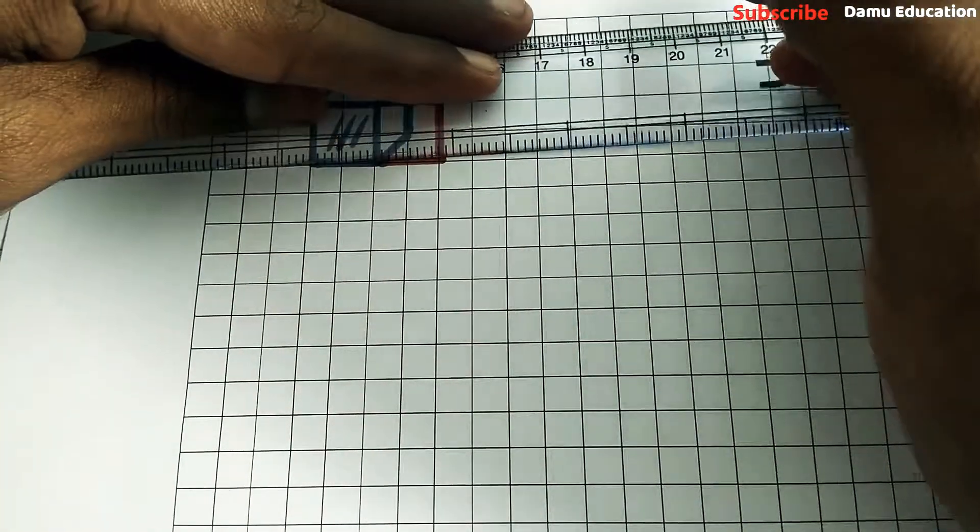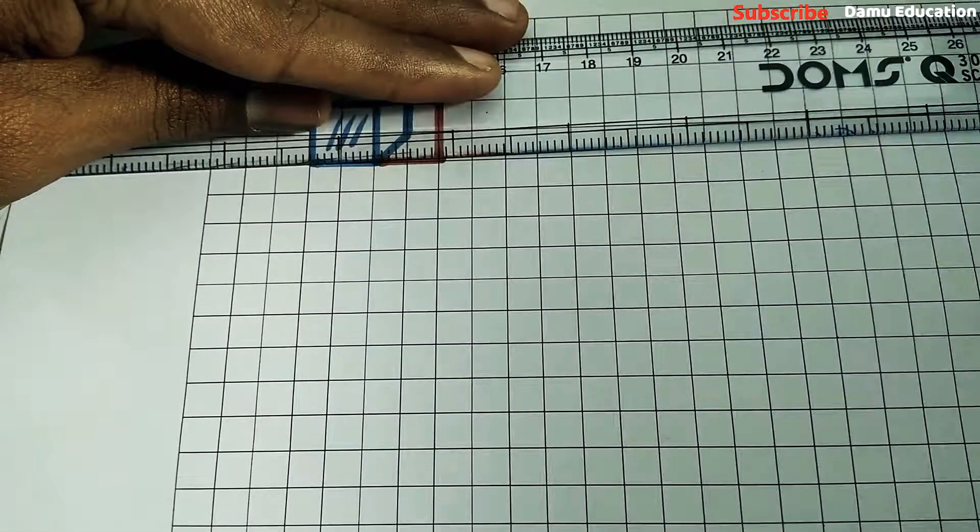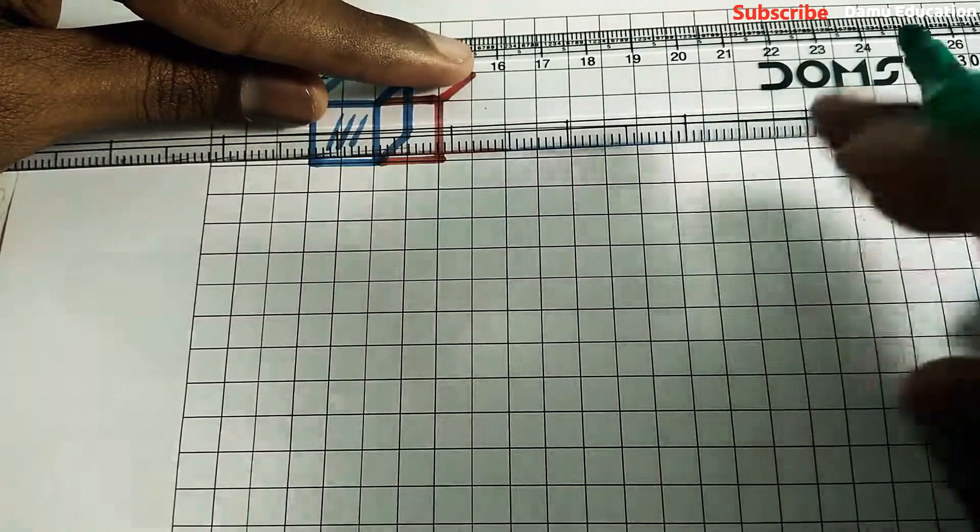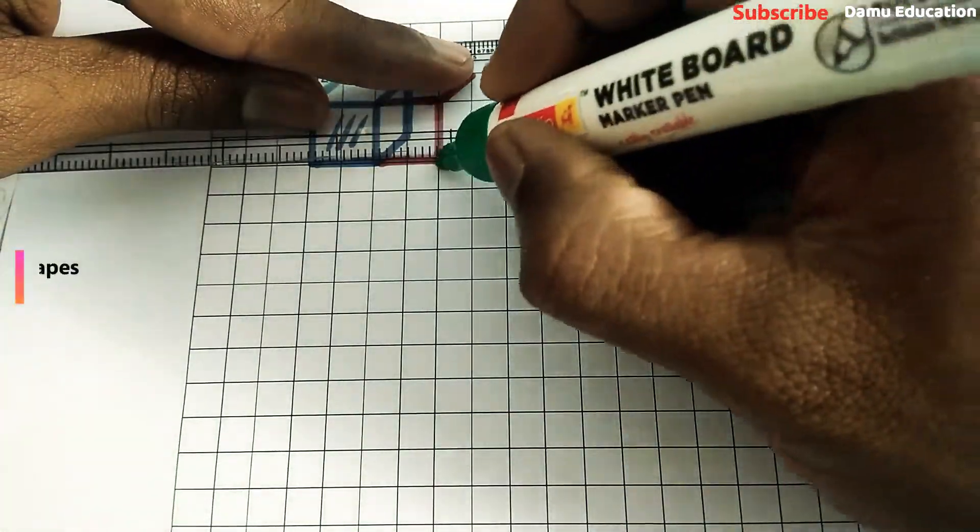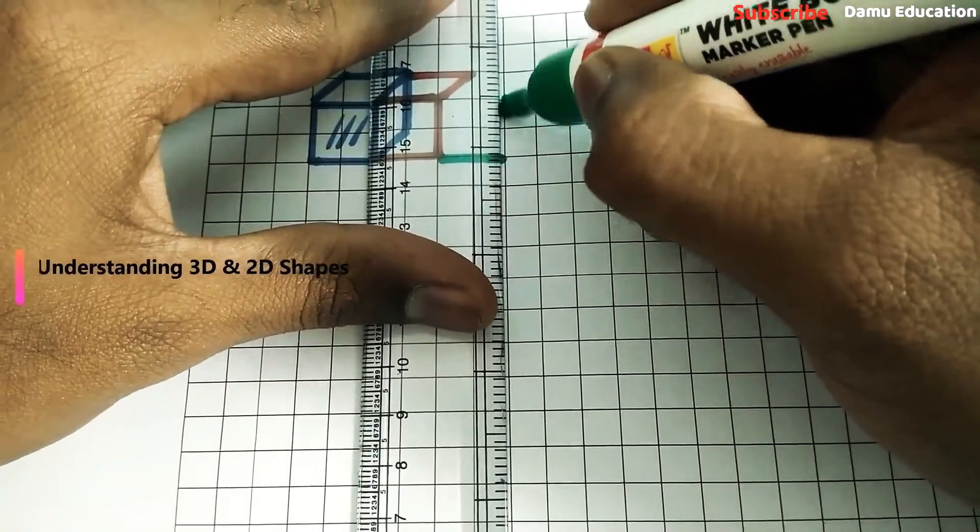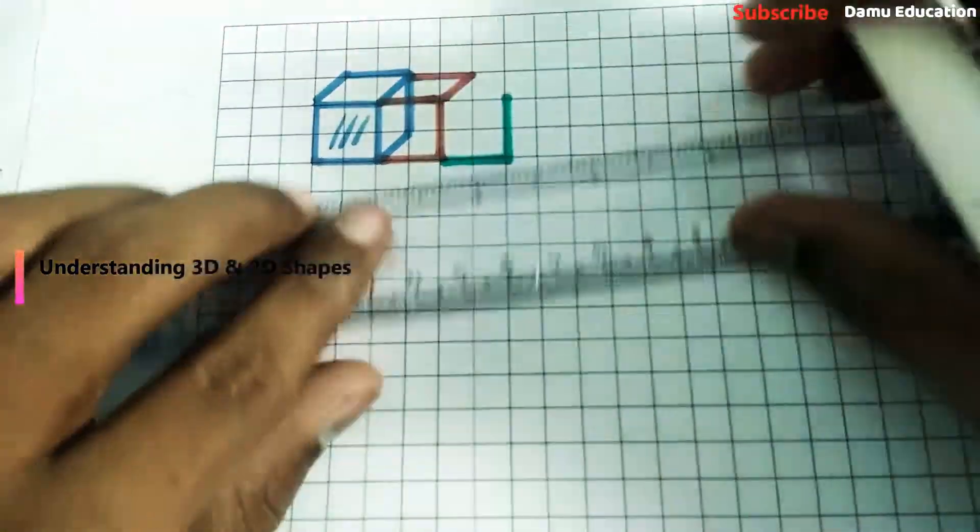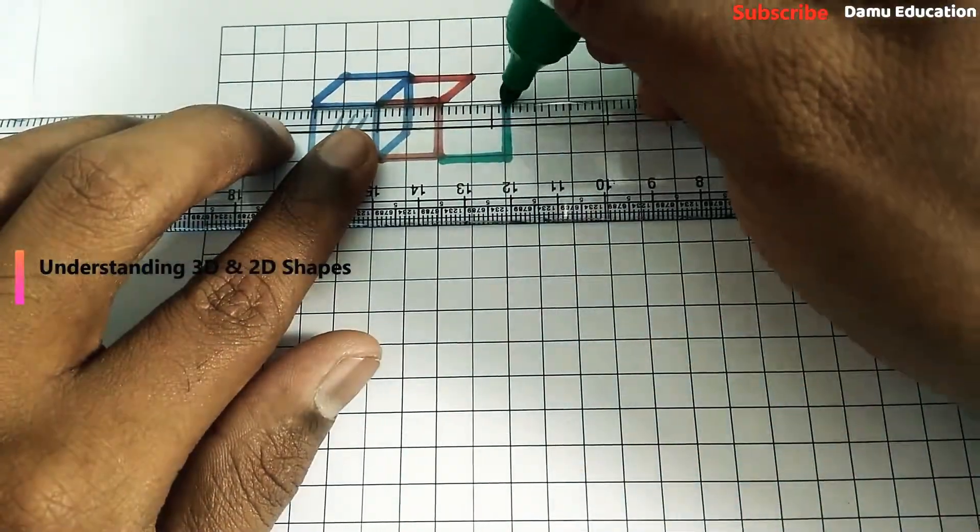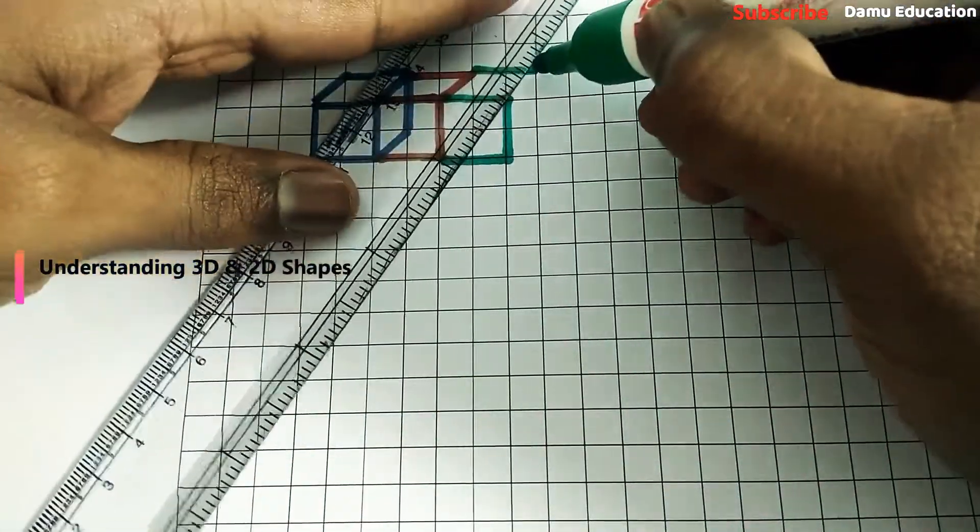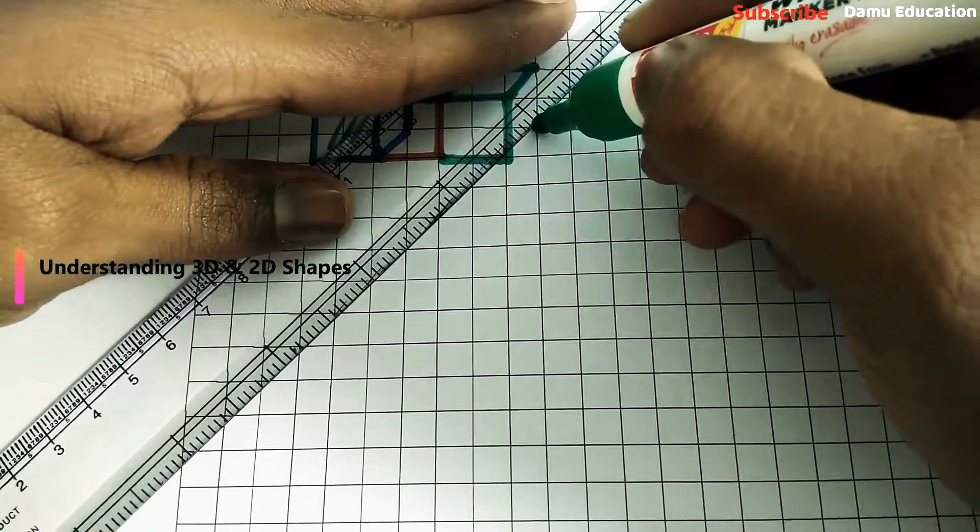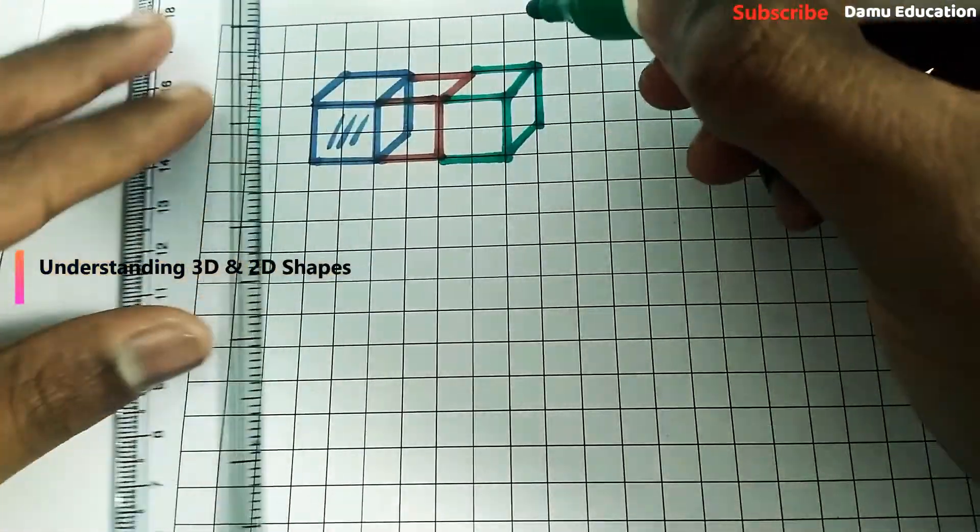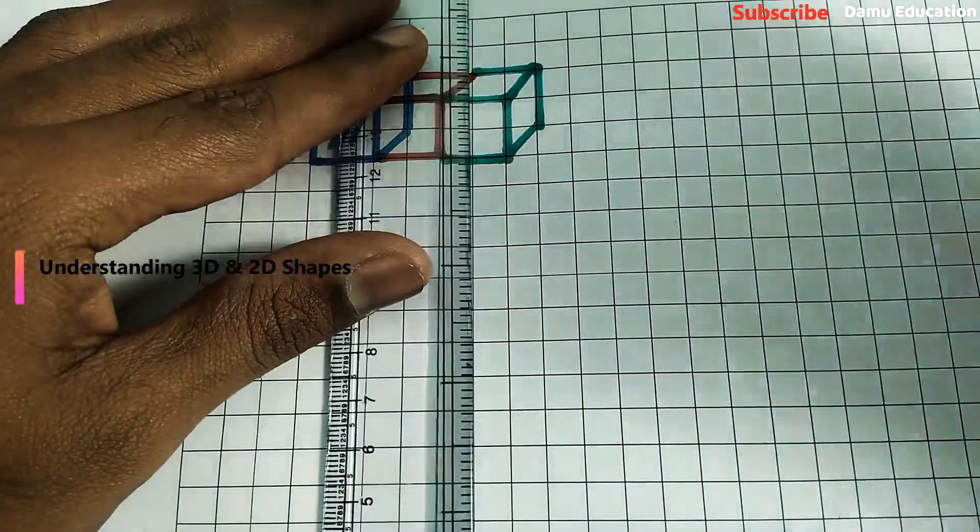Then here we will join one more cube. How? Simply just extending of this line to here. Just framing like this, simply extend like this, just joining like this. You can draw like this also, no problem.